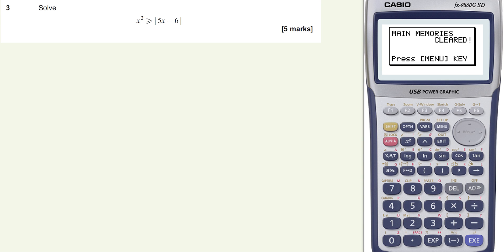Question three is the solving inequalities question. We've got five marks for solving x squared is greater than or equal to the absolute value of 5x minus 6.